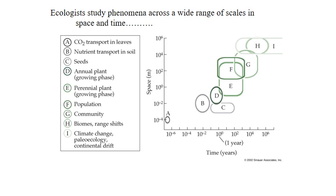This highlights the importance of experimental scale. An ecologist studying CO2 transport in leaves conducts experiments over very short time periods and tiny spaces. A scientist studying populations of annual plants works over roughly a year at intermediate spatial scales. At the other end of the spectrum, researchers studying paleobotany, climate change, or continental drift conduct experiments spanning millions of years and potentially encompassing the entire globe.